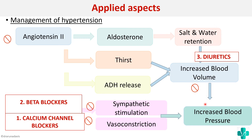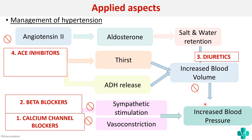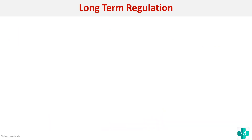Finally, you can decrease the production of angiotensin 2 by giving ACE inhibitors — angiotensin-converting enzyme inhibitors — so that angiotensin 2 is not formed and all its effects are prevented. This is an outline of how hypertension can be managed based on this flow chart.